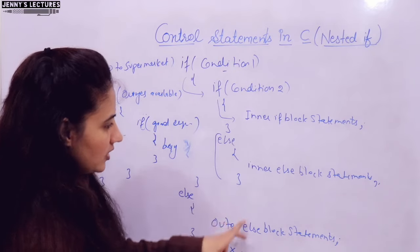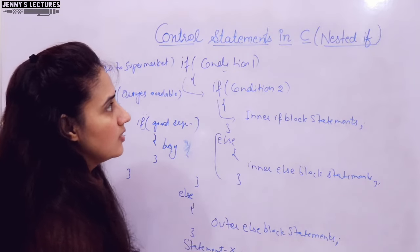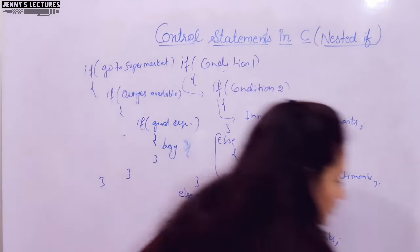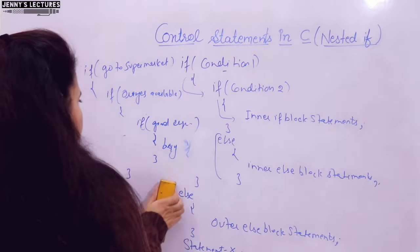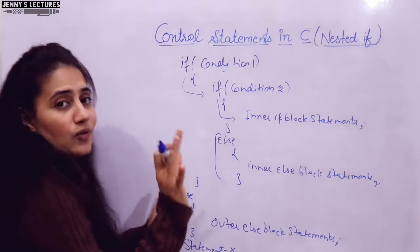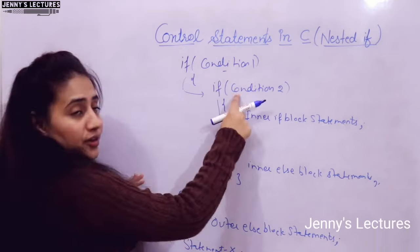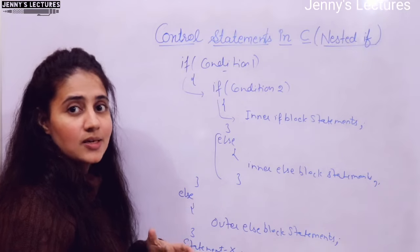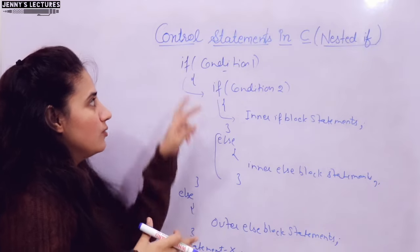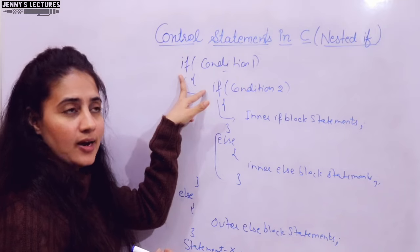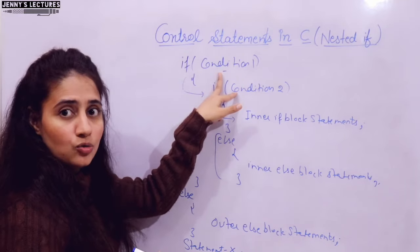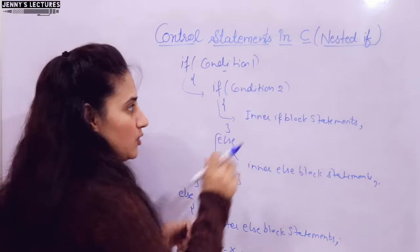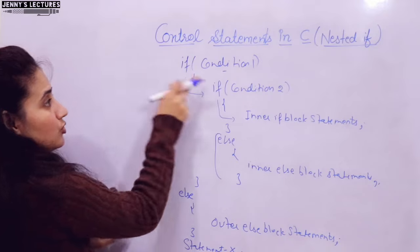This is the general structure and syntax of writing nested if. Now let's look at the flowchart to understand the flow. Also note: it's not always necessary to write two ifs. Even one if can sometimes do the same task, as we'll see with a program example. First, let me draw the flowchart.